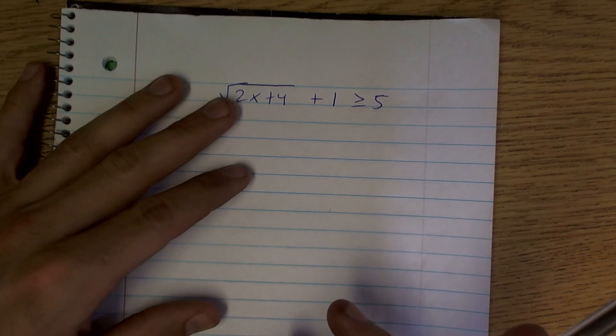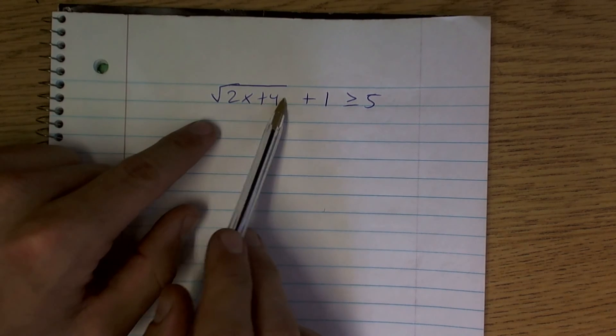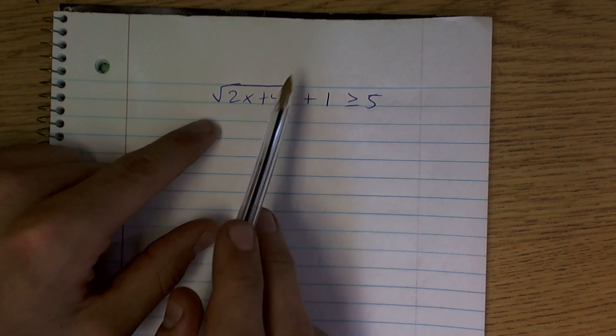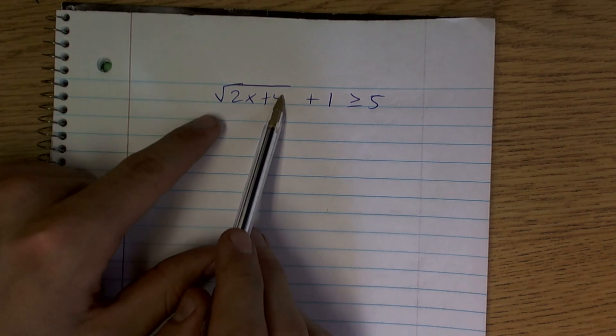Shouldn't I subtract them? So, well, the first thing, yes, you're right. So the first thing you need to do, whenever you're going to be squaring a number, or squaring this term to get rid of the square root, you've got to make sure you have this isolated, meaning it's by itself.